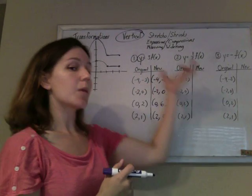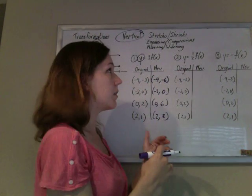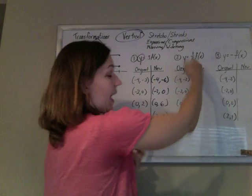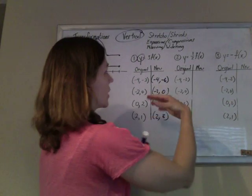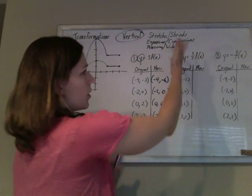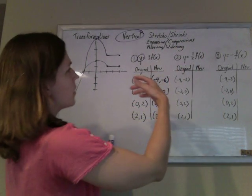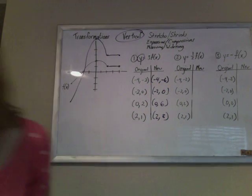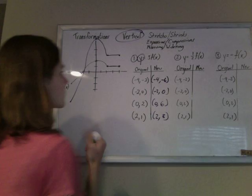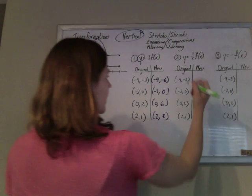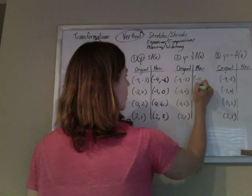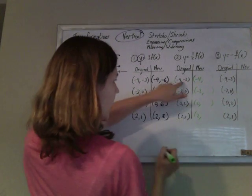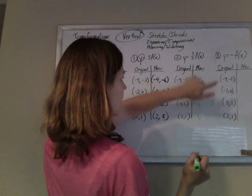And guess what? When it's smaller than 1, between 0 and 1, it's going to shrink it. So when we take all the y values and half them, it vertically shrinks or compresses or vertically widens, which doesn't really make a whole lot of sense, but you'll see it. And so, again, this is a vertical thing, so all the x values are going to stay the same, and we're just going to take half of all the y values.